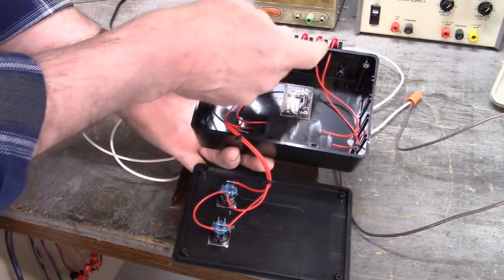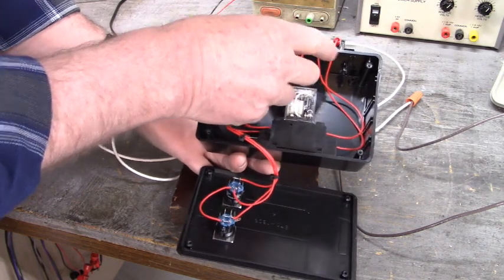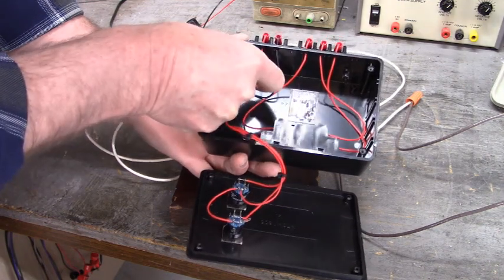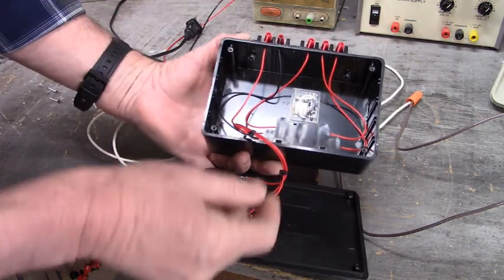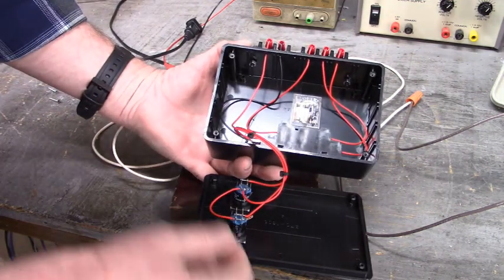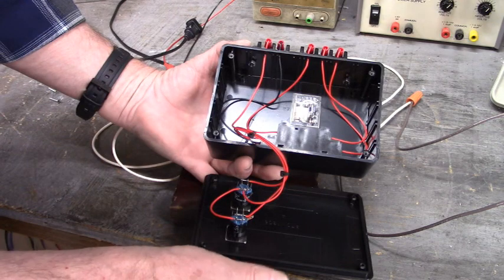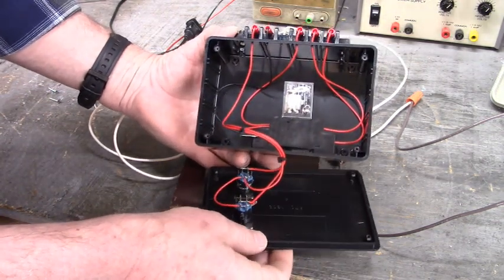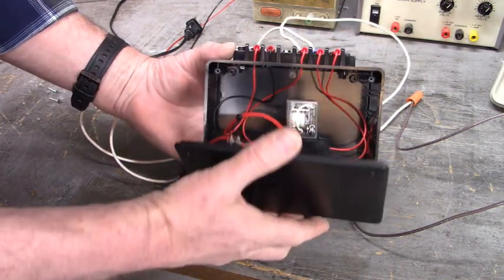Here's the wires from the common, normally open and normally closed of the relay up to the terminal board. Here's the plus 24 and ground that routes the external power supply out to the switches and into the coil. If you can, go out there and make you one of those.